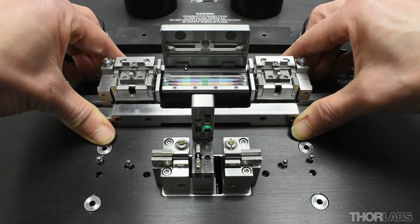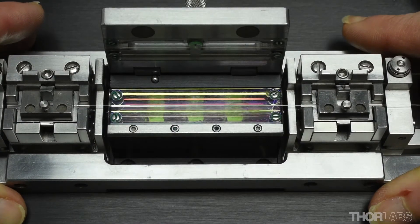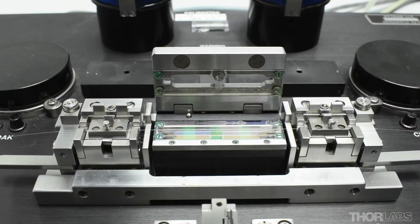Now gently lower the transfer jig so that the fiber lies in the lower channel of the mold and the transfer jig is resting on the top surface of the unit.